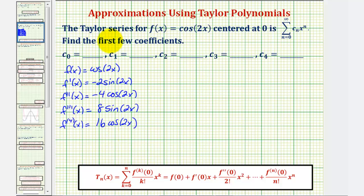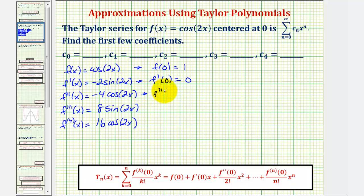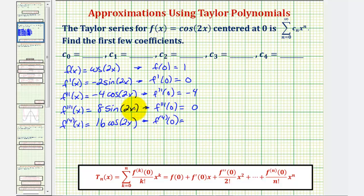Because the series is centered at zero, we evaluate each derivative at zero. f(0) = cos(0) = 1. f′(0) = −2·sin(0) = 0. f″(0) = −4·cos(0) = −4. f‴(0) = 8·sin(0) = 0. And the fourth derivative at zero equals 16·cos(0) = 16.